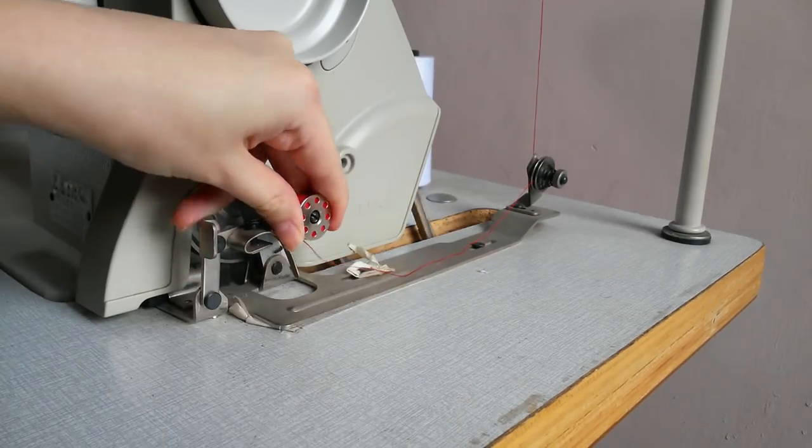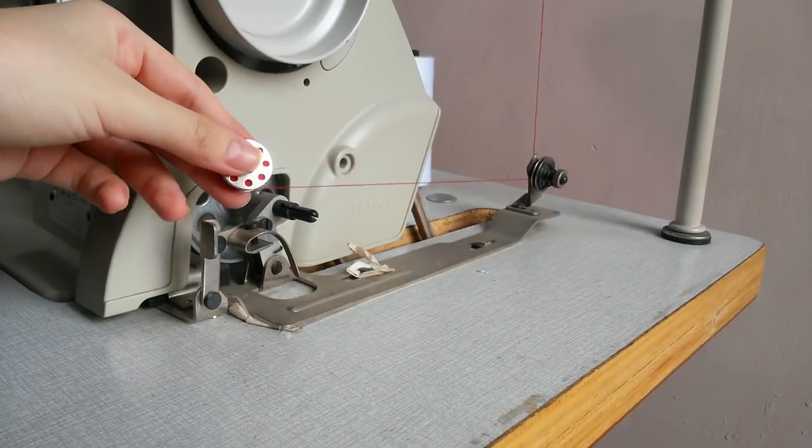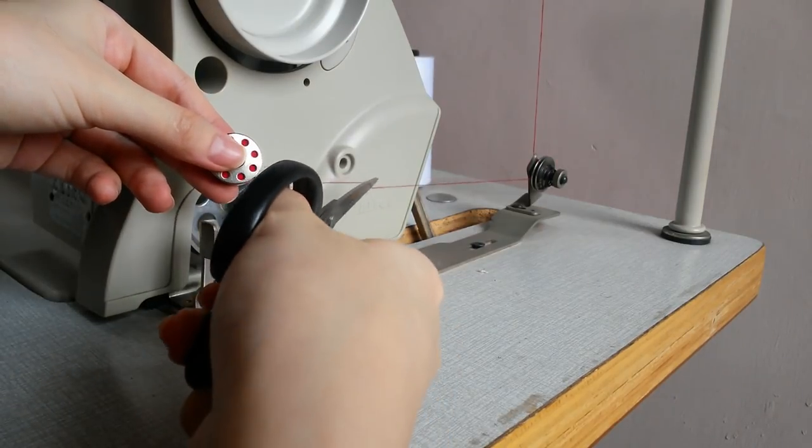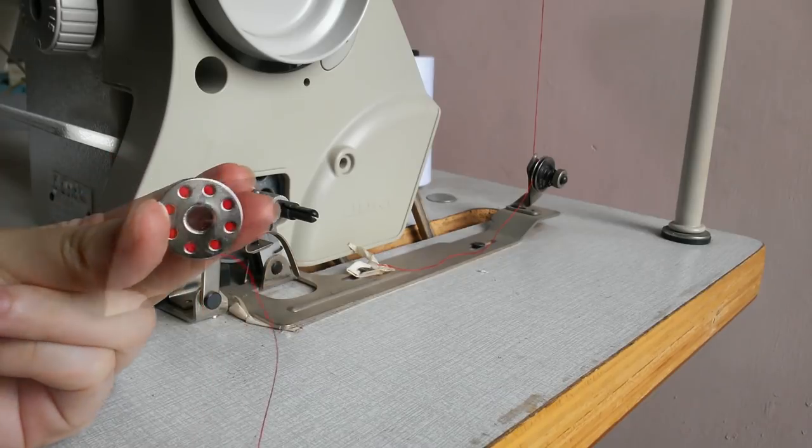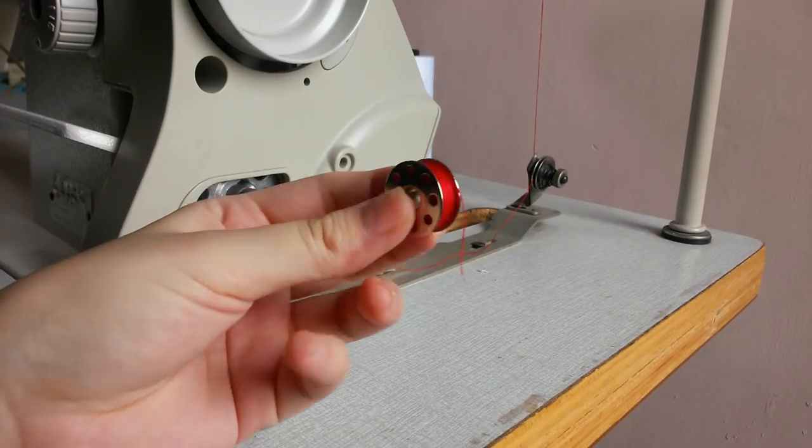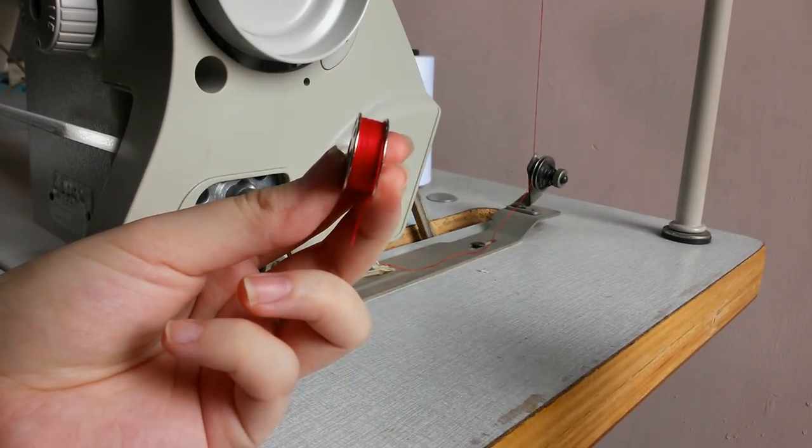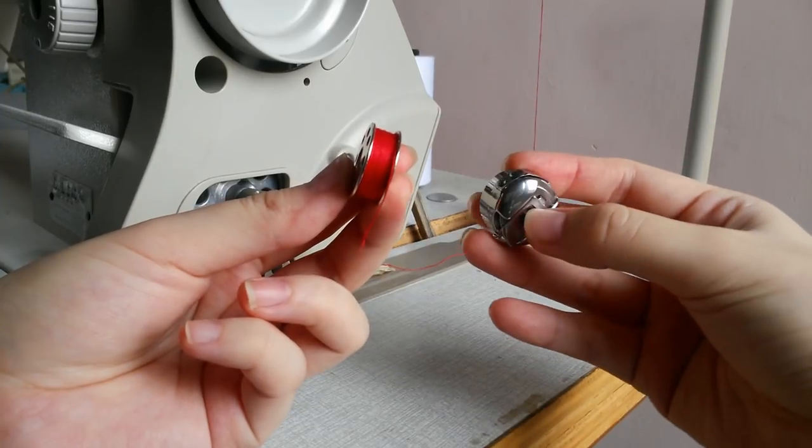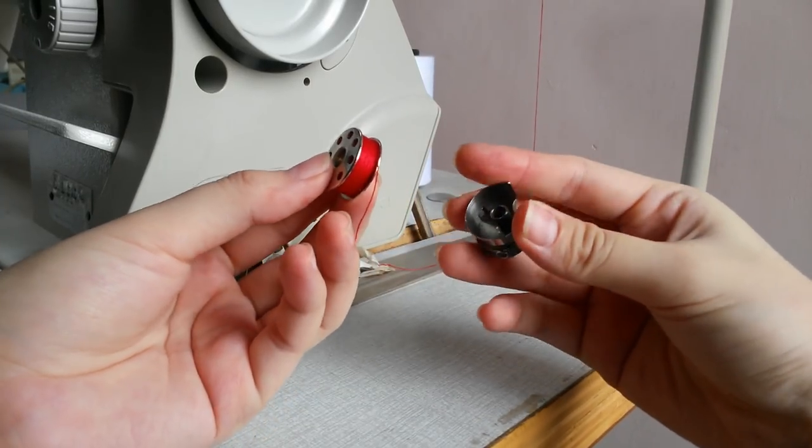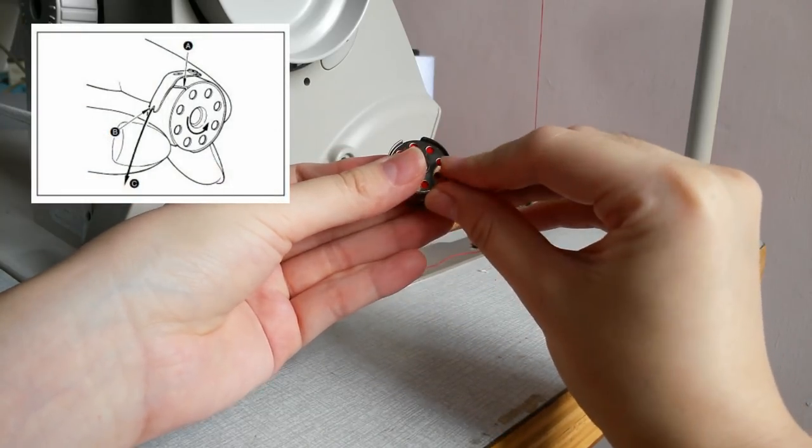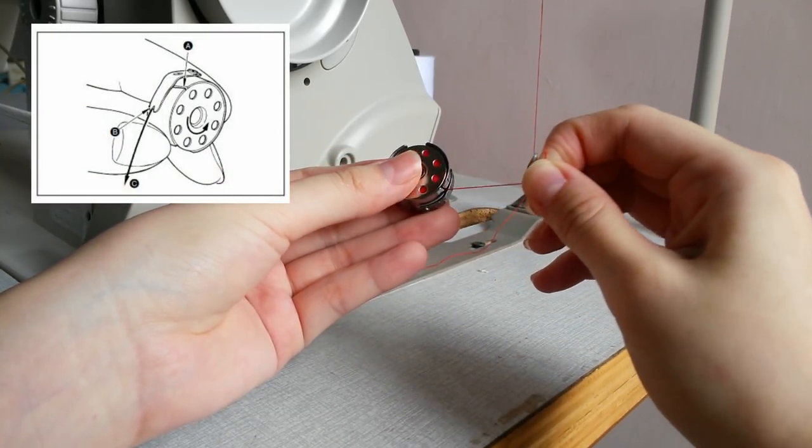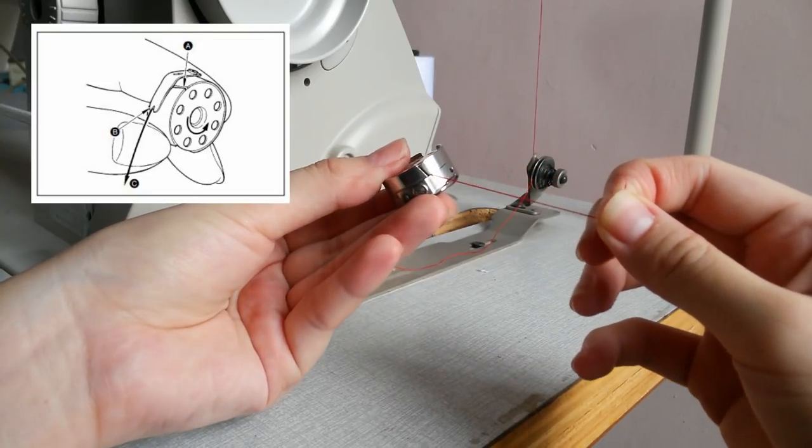Put the bobbin into its case. Direct the thread into the small slit like this.